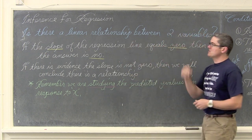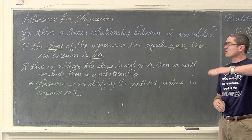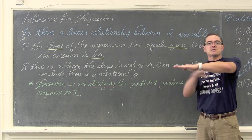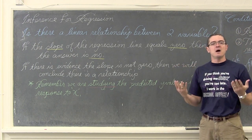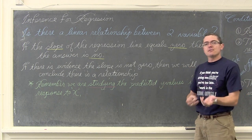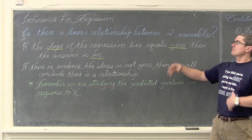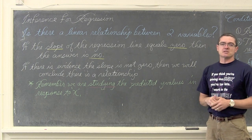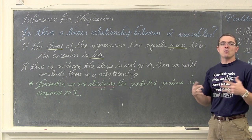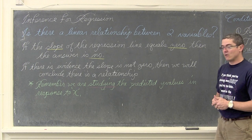Is there a linear relationship between two variables? Well, if the slope of the regression line equals zero, then the answer is no. There is no relationship. If the x-axis is changing and the y-axis is not responding, there is no linear relationship. We are talking about linear relationships in intro to statistics — there are other types of regressions such as quadratics and cubic regressions, but we are just talking about linear regression.